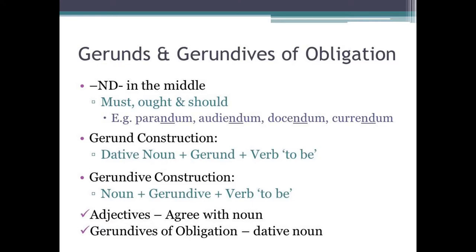So a gerund construction is made up of a dative noun, plus the gerund, plus a verb to be. And similarly, a gerundive construction is formed with a noun, plus the gerundive, and again plus the verb to be.